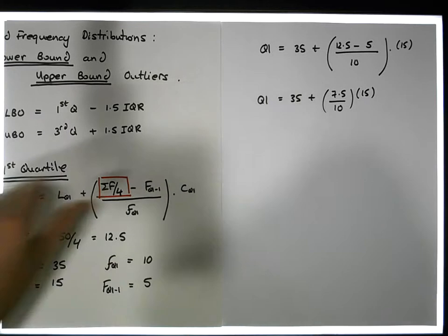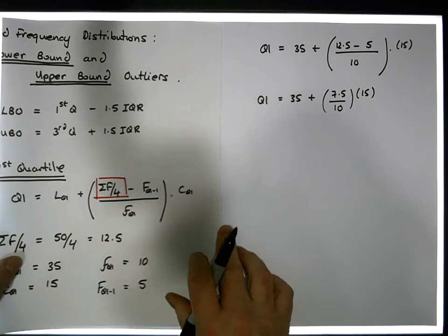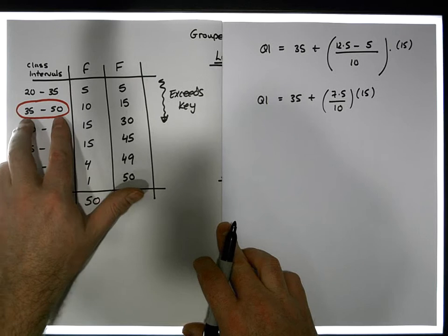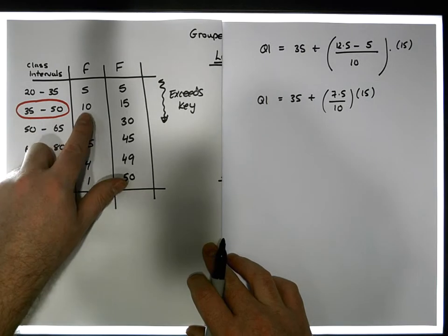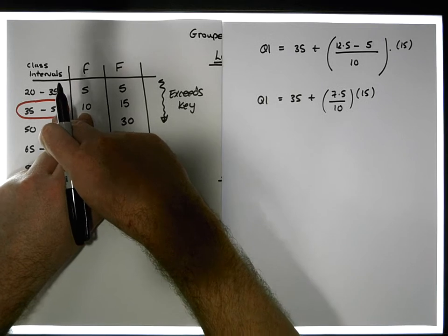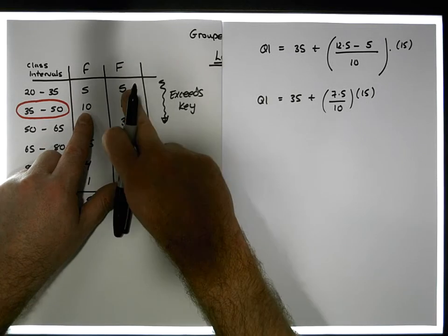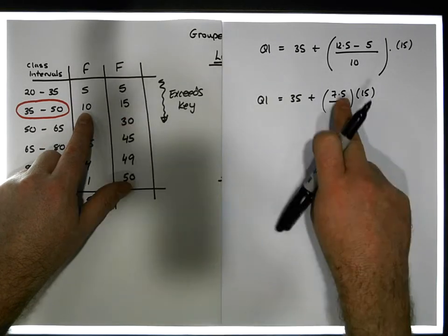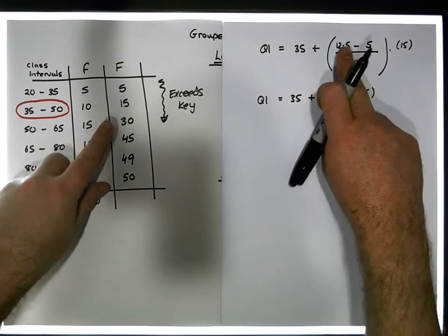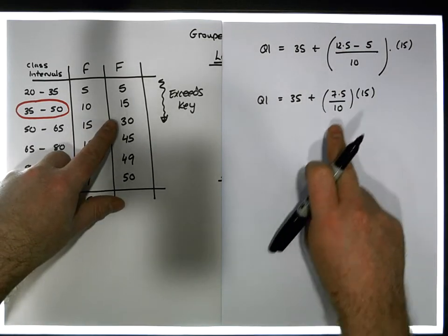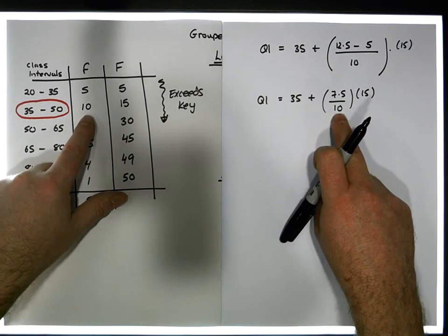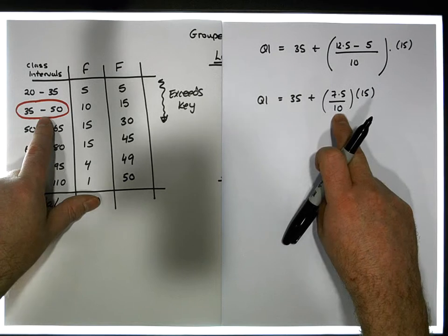Now, let's just reflect on this — and I've covered this in the first quartile class video. With respect to the first quartile class, there are 10 observations in it. We know that 12.5 of the observations need to be less than the upper bound, but there are 5 in the class previous, so there must be 7.5 observations in this class — which is the difference between the two frequencies. So 7.5 of the 10 observations would demarcate the first quartile.